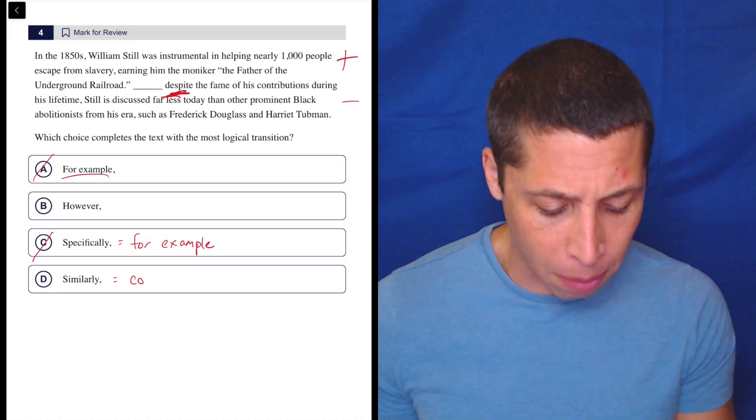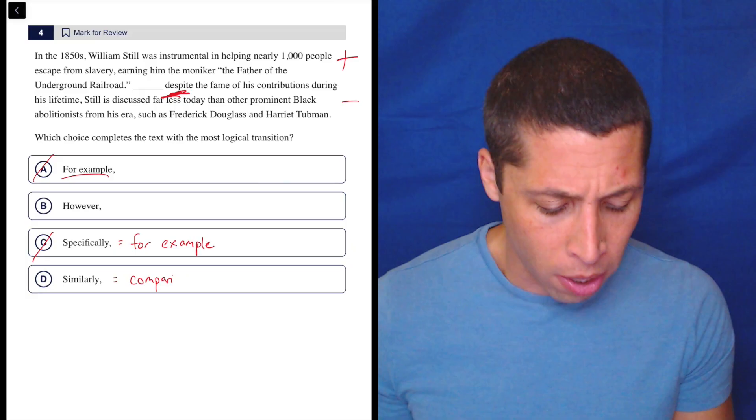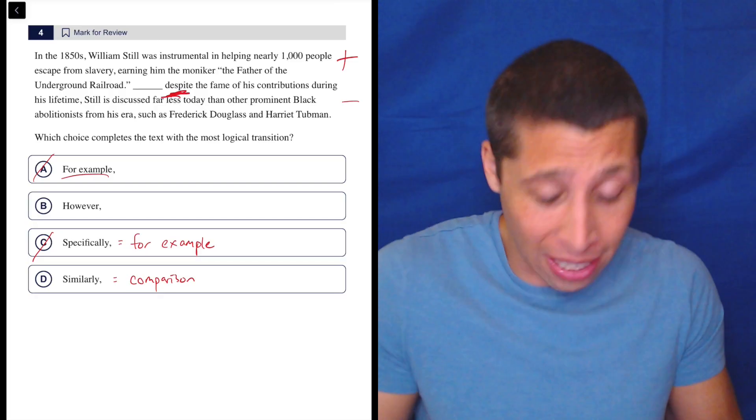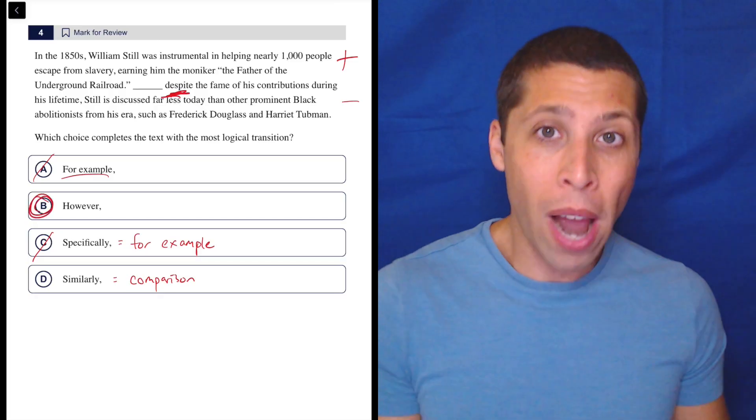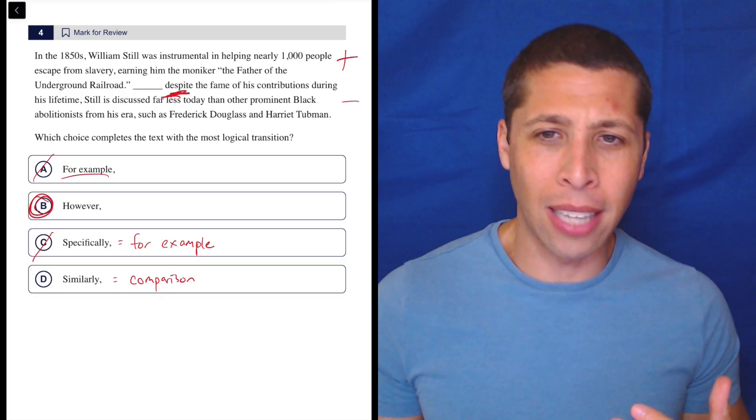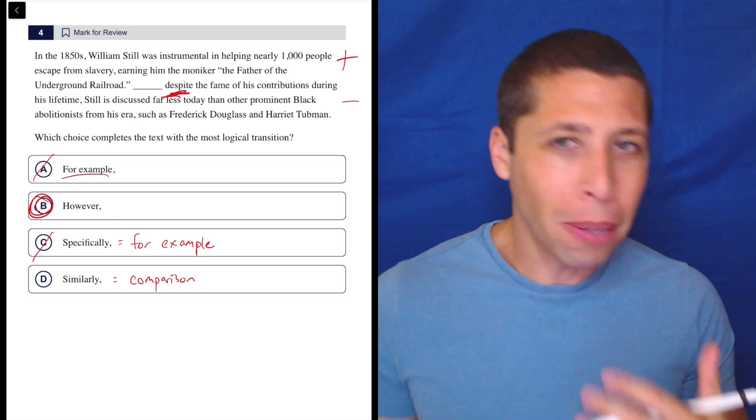And similarly is a comparison word. So are we making a comparison? No, we're making a contrast. So however is right, but I do think there's this weird thing that why are we doubling up with the contrast?